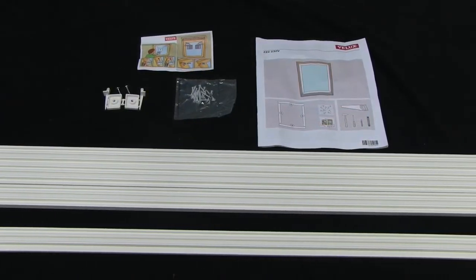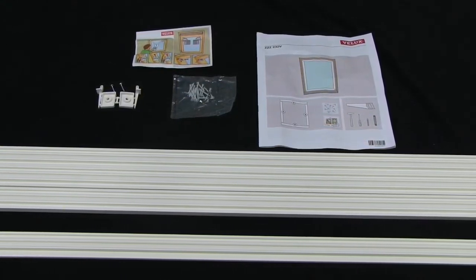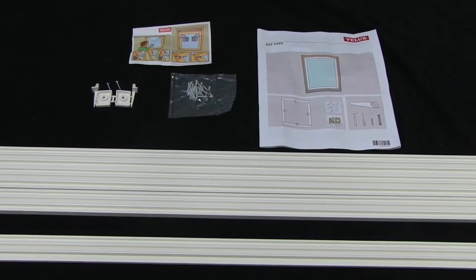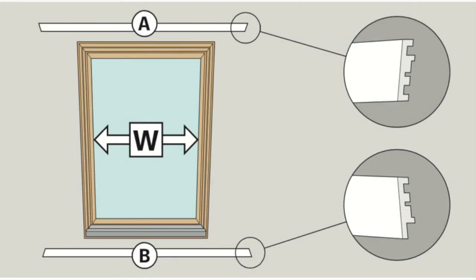Now would be a good time to take note that one of the vinyl trim pieces is slightly different from the other three. This will be your B piece and the other three vinyl trim pieces will be referred to as the A pieces. You will notice the subtle difference on the grooved side of the trim pieces. The B piece will be installed on the bottom frame only and the A pieces will be installed on the top and side frames.